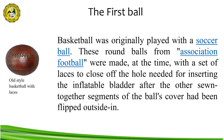The first basketball was originally played with a soccer ball. These round balls from association football had laces, which could cause bounce passes and dribbling to be unpredictable. Eventually, a lace-free ball construction method was invented, changing the game indoors. The first balls made specifically for basketball were brown, and it was only in the late 1950s that Tony Hinkle, searching for a ball more visible to players and spectators alike, introduced the orange ball now in common use.